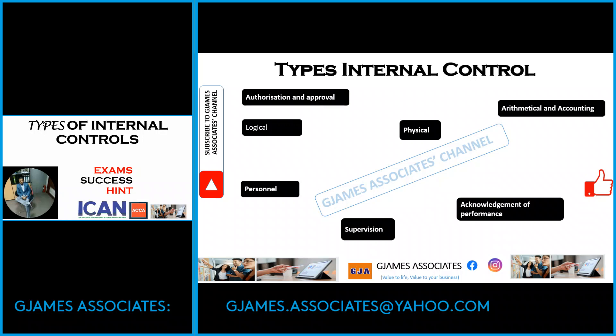There should also be internal control around personnel. For example, the HR handbook tells us what the organization expects of us, what our job roles are, the dos and the don'ts — those are controls that should be put in place under personnel. Also, there should be delegation and segregation of duties, ensuring that a transaction does not start and end with one person, so that there will be no manipulation. Segregation of duty is important — we should break transactions into piecemeal.